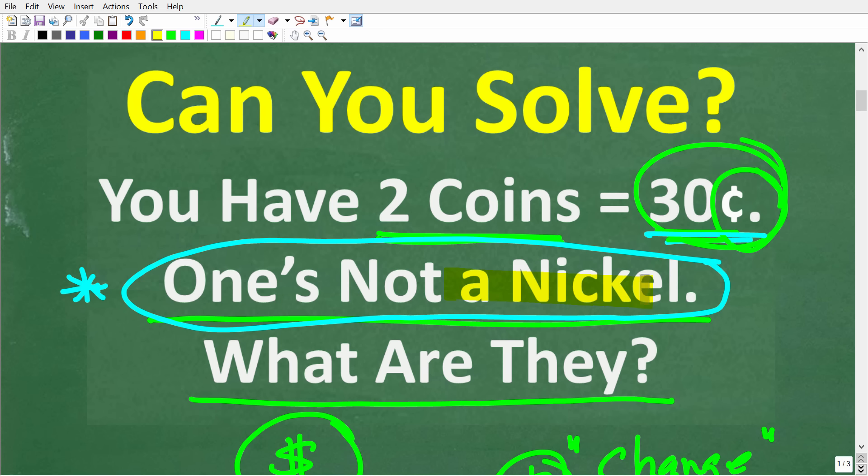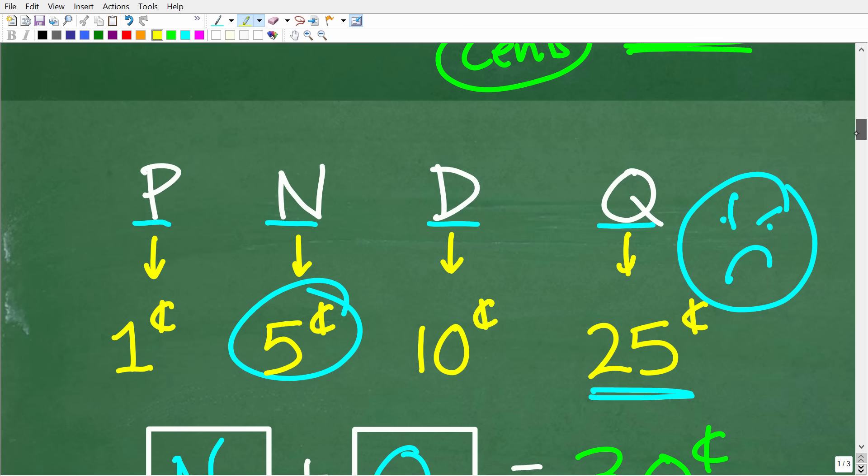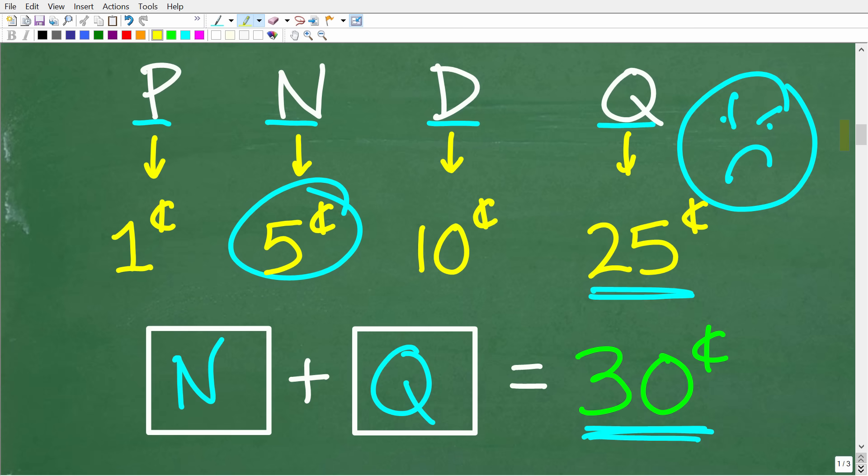But I can tell you right now from experience, a lot of people read this problem quickly and their brains kind of just interpreted, oh, no nickels. So they're just trying to figure out how to get to 30 cents. But of course, if you play with this enough for a quick second, it's impossible to have two coins that will get you to 30 cents. So you do have one nickel.